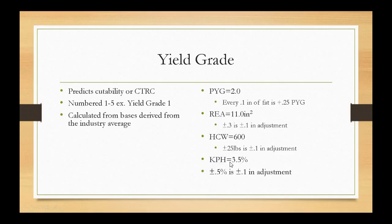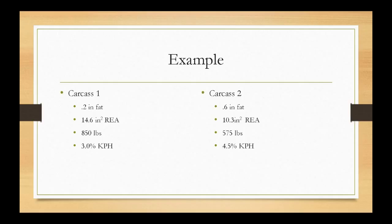KPH stands for kidney, pelvic, and heart fat, and it's expressed as a percentage of carcass weight. 3.5% equals an adjustment of zero. For every half percent plus or minus from 3.5%, we add or subtract 0.1. So if it has 4%, that's more fat than 3.5% — more fat is bad, so we add 0.1. If it has 3%, that's less fat — less fat is good, so we subtract 0.1. Remember, we want the overall yield grade to be as low as possible.